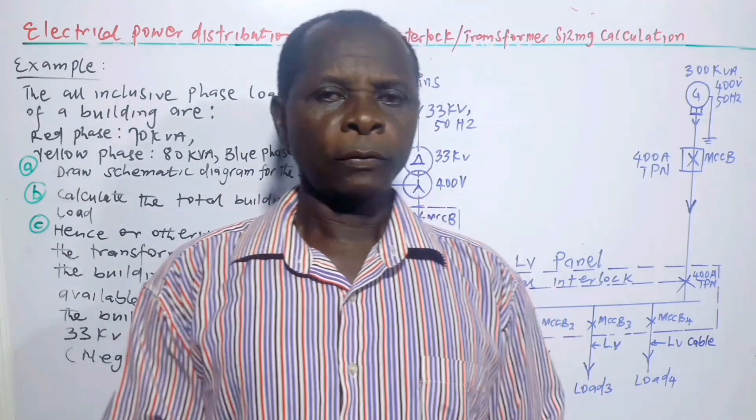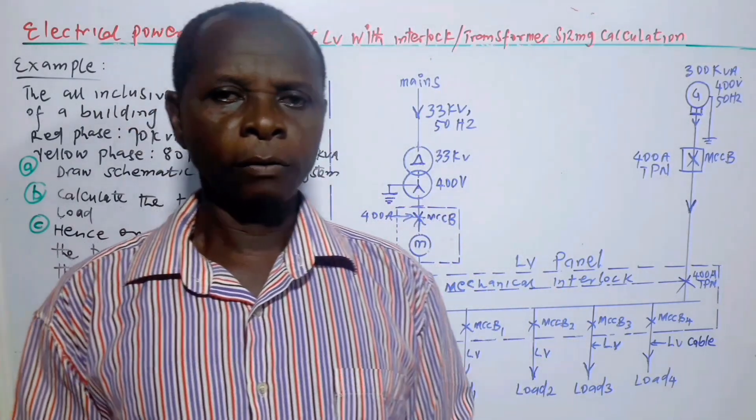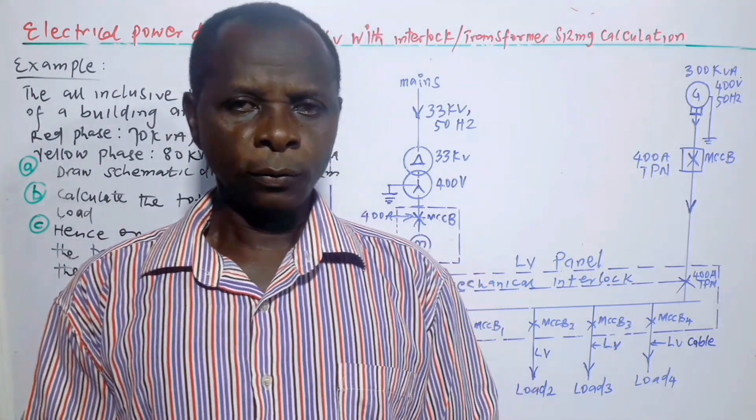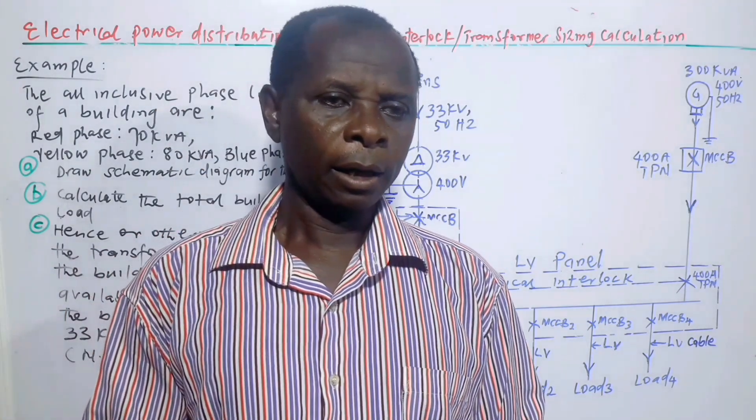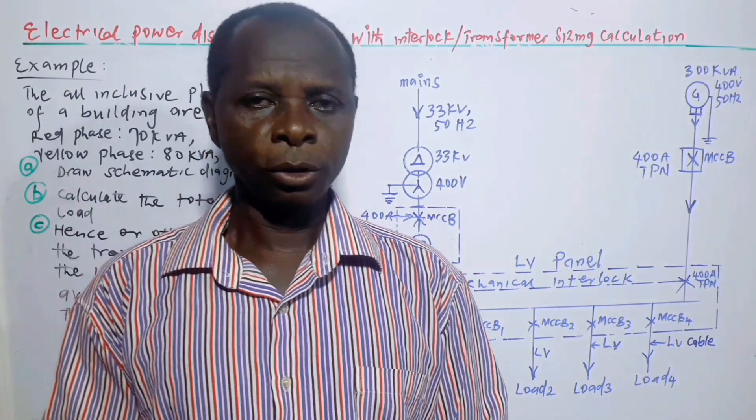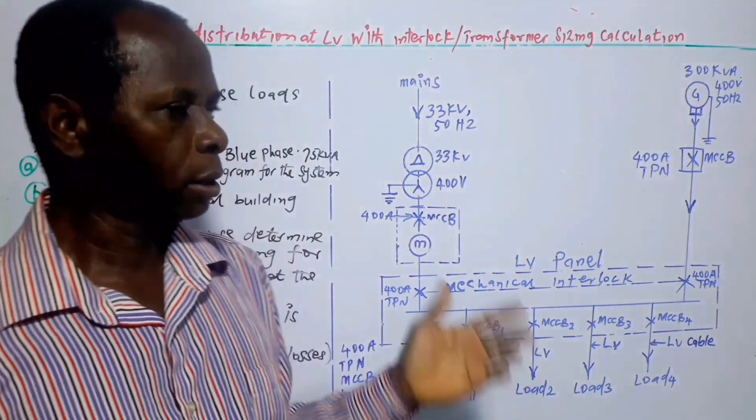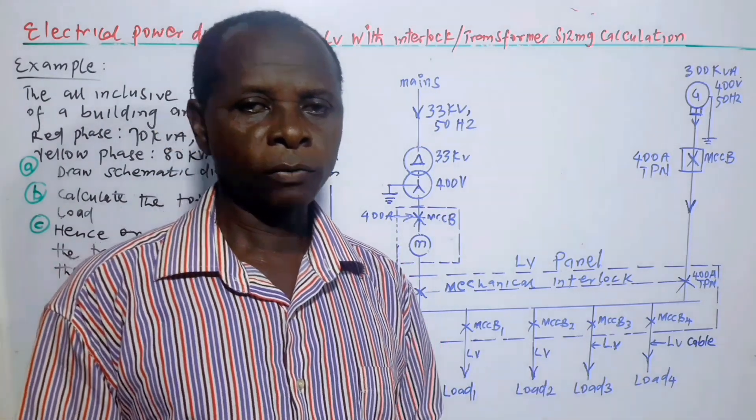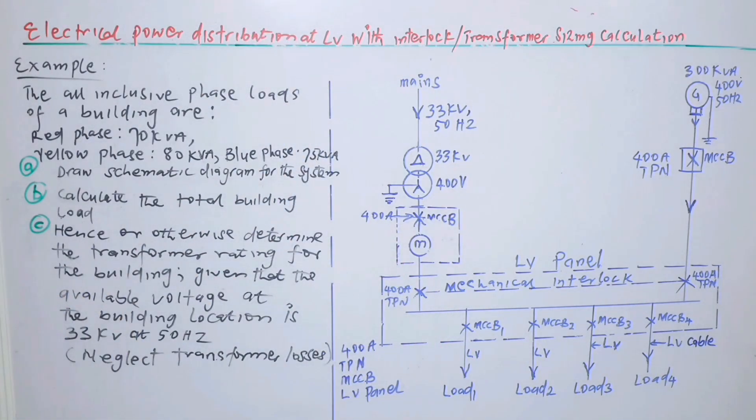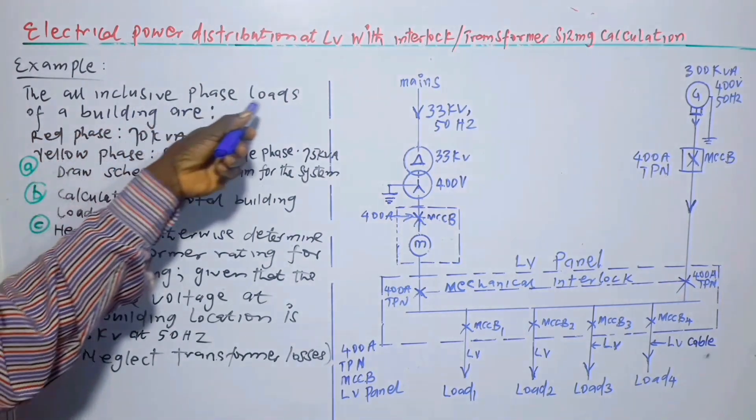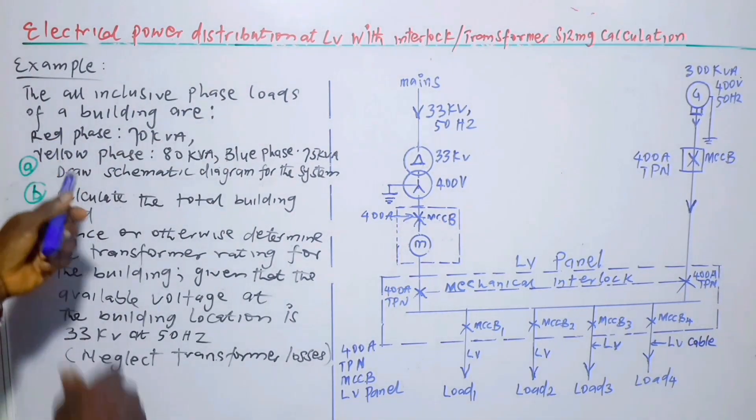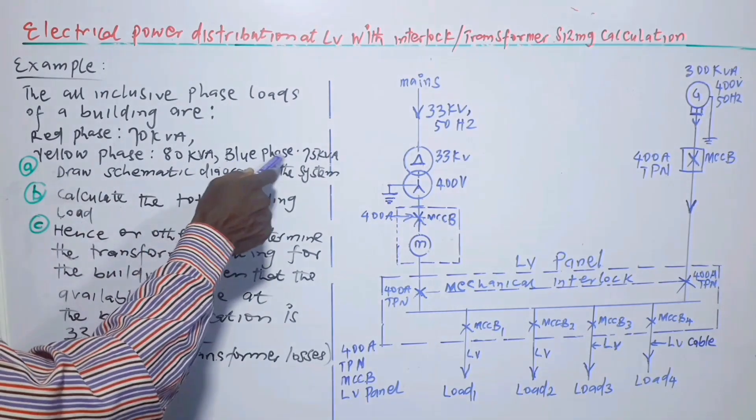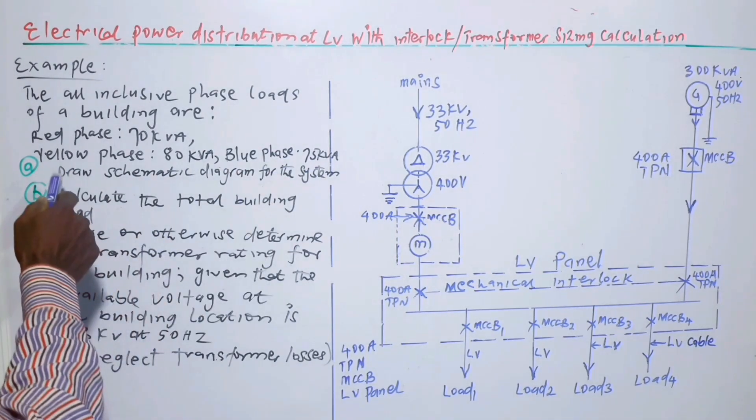For the purpose of a thorough understanding of the concept of a power distribution system at low voltage and transformer sizing calculation, the concept is illustrated making use of an example as follows. Example: the all-inclusive phase loads of a building are red phase 70 kVA, yellow phase 80 kVA, blue phase 75 kVA.